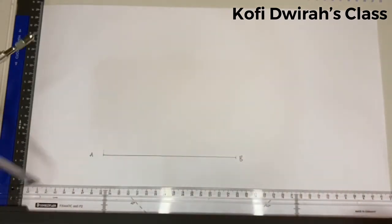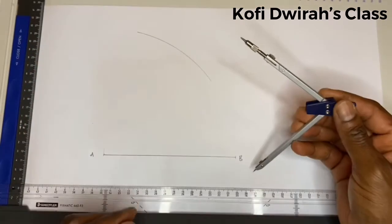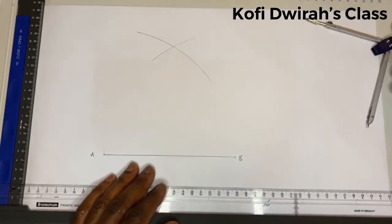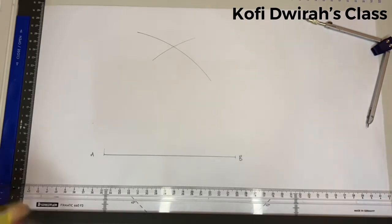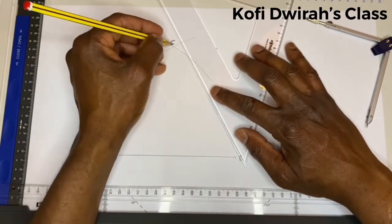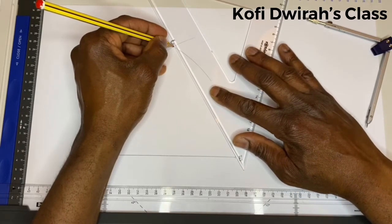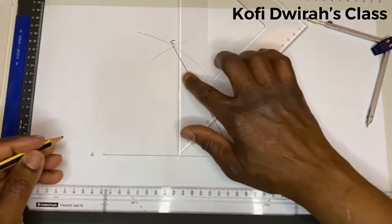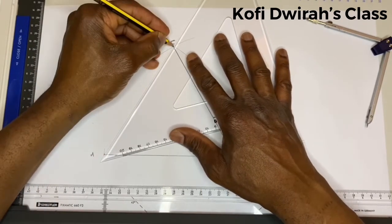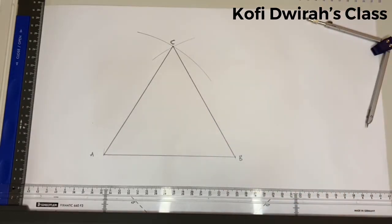So we have this. Then at point A you draw your arc, and at point B you draw another arc. There we have point C. Then you draw your straight line from C to B, and from C to A. Good, so we have an equilateral triangle.